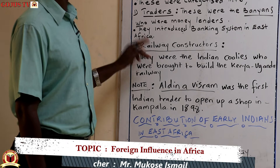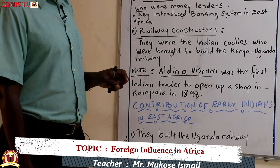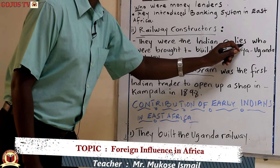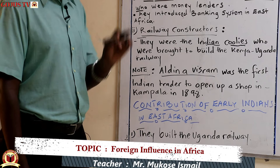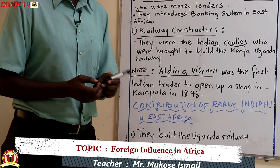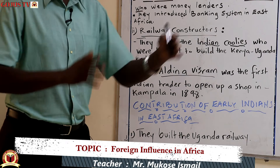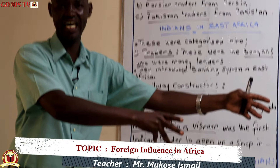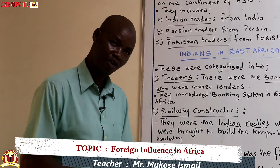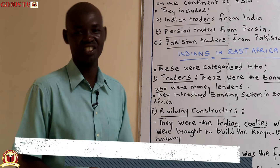The second category was that of constructors. These were the Indian coolies, who were brought to construct the Kenya-Uganda Railway. The reasons for constructing the railway, as discussed in the P6 workbook, were: to link Uganda to the coast, to end the slave trade, and to make the transportation of goods from the interior to the coast of East Africa easier.